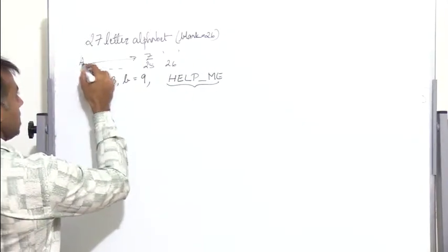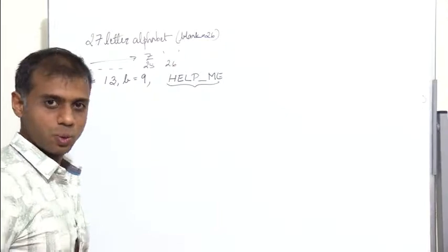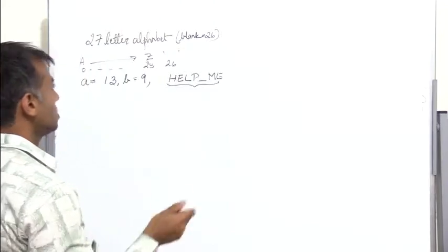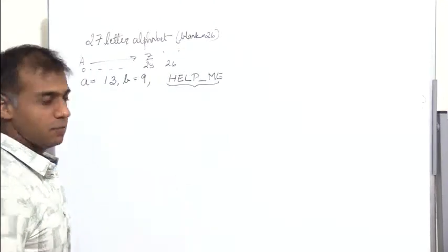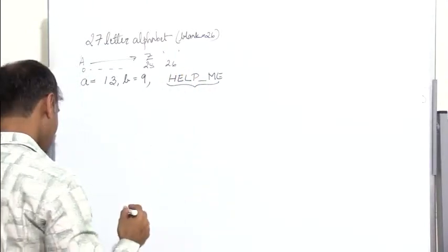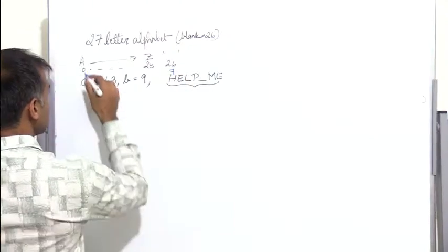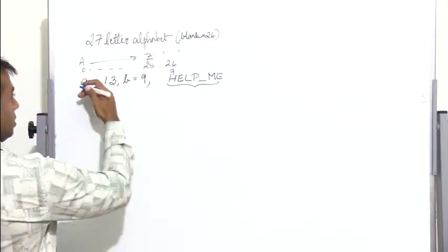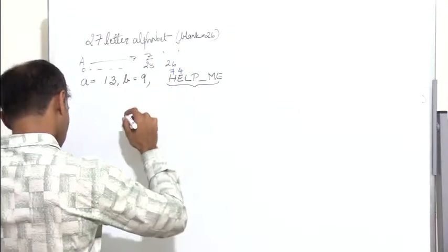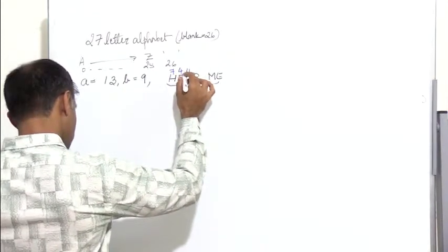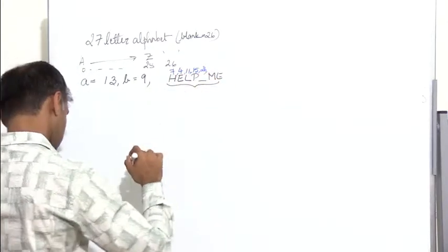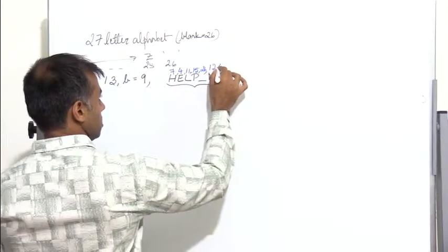The alphabets a to z are denoted by numbers 0 to 25, and a blank by the number 26. The corresponding numbers for the plaintext are: h is 7, e is 4, l is 11, p is 15, blank space is 26, m is 12, and e is again 4.